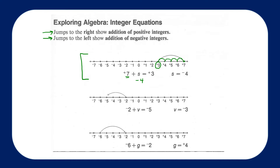Take a look at our second number line. We're going to start at the integer negative 2. If we add negative 3, that will mean that we are leaping back 1, 2, 3 spaces to the left, and we will land at negative 5.